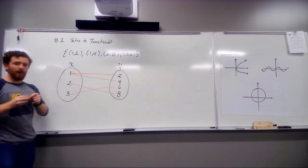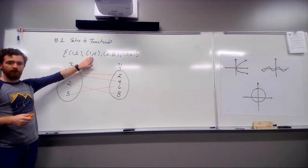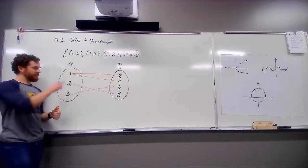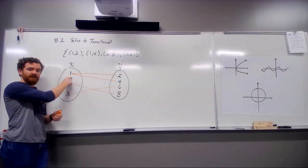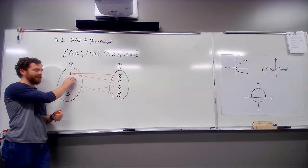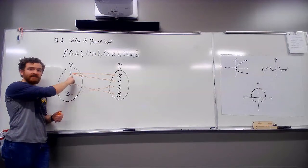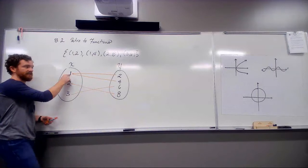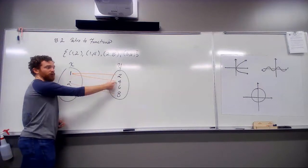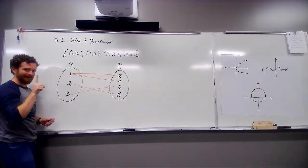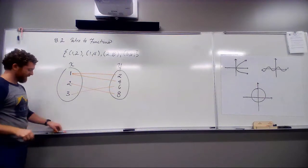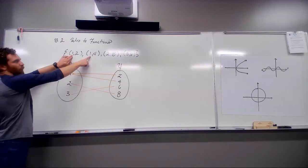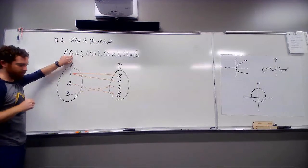We probably could tell whether it's a function from our definition, but the fact that one in our graph, in our cloud chart, has two lines coming off of it, tells us this is not going to be a function. We have an x paired up with more than one y. It needs to be exactly one y. One appears in the x's twice, so this must not be a function.